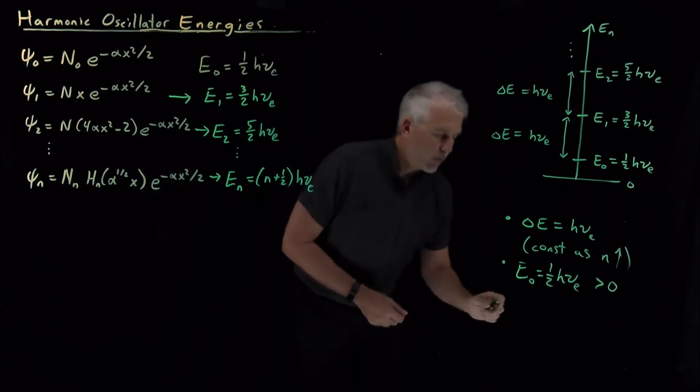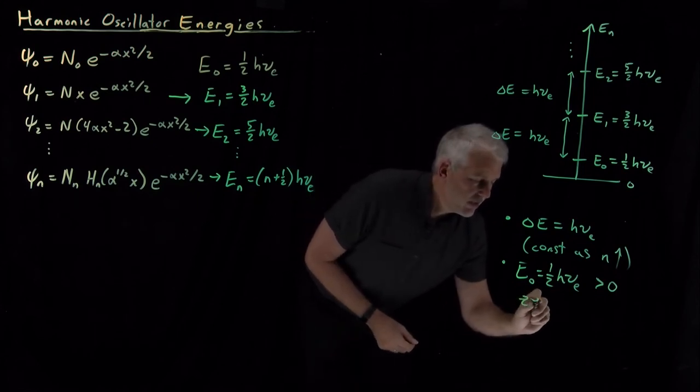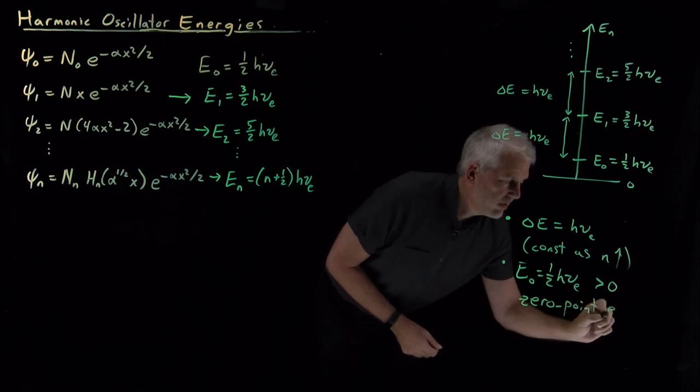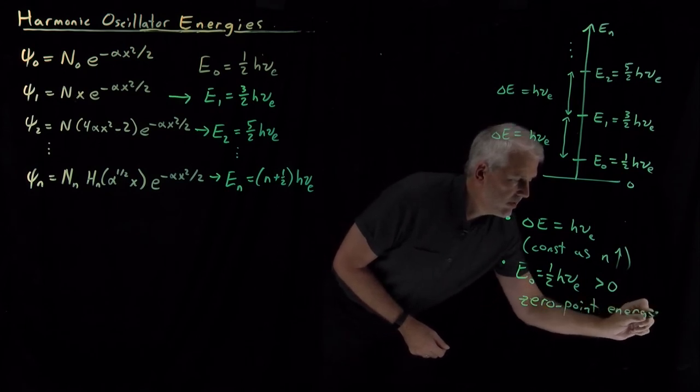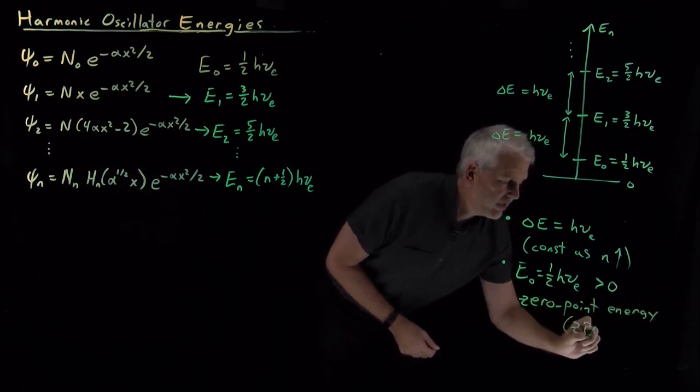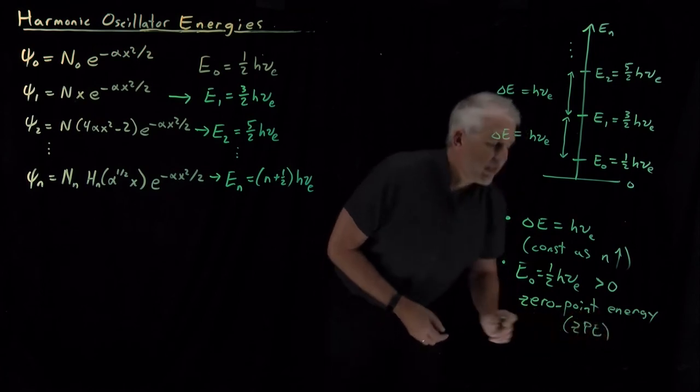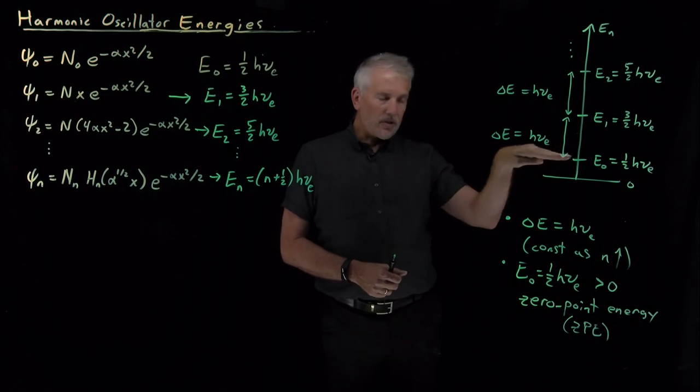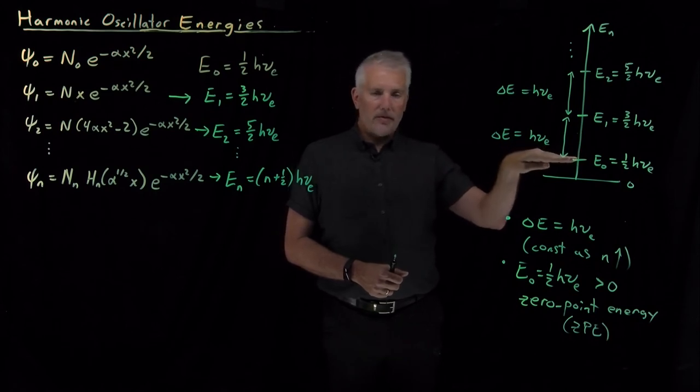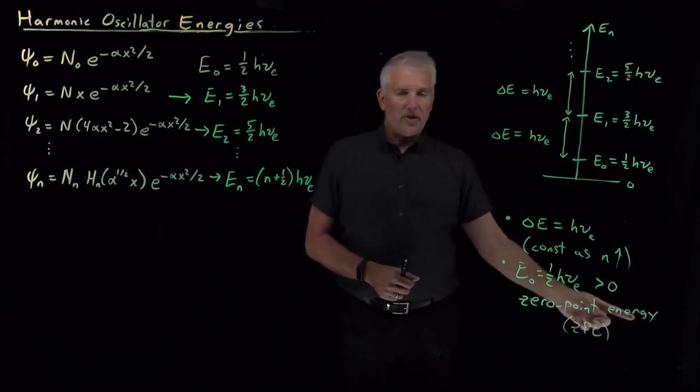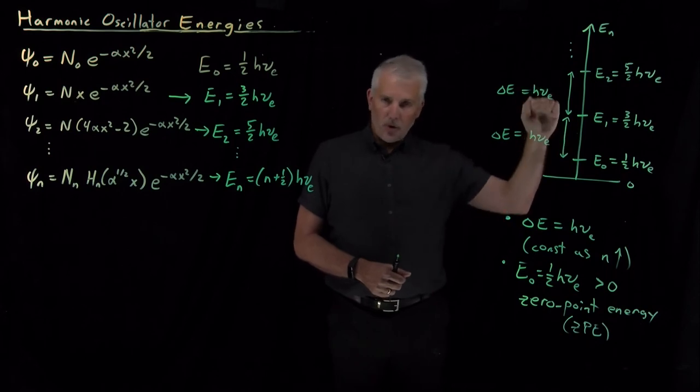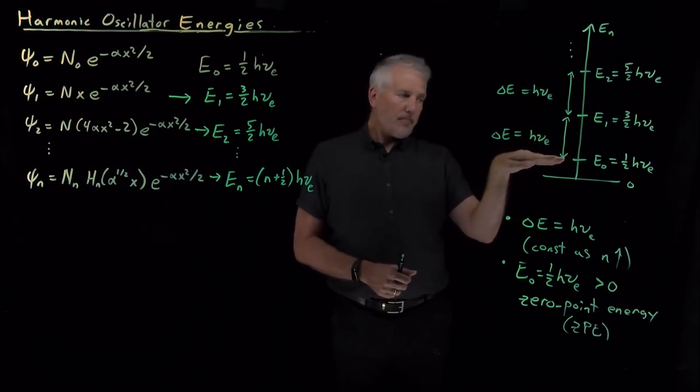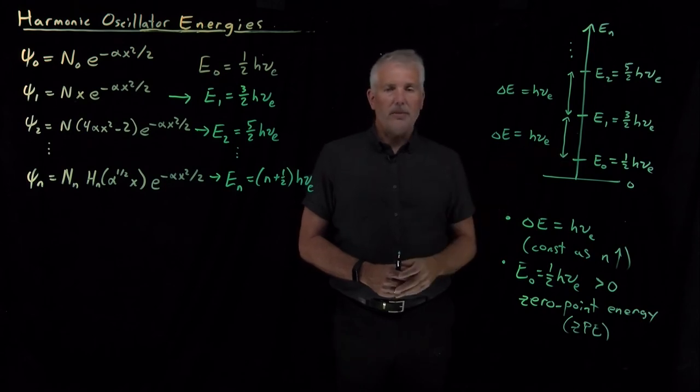It must at least have one-half h nu worth of energy and often more than that. So we say that the system has a zero-point energy, often abbreviated ZPE. Saying the system has a zero-point energy essentially just means that if we bring it down to its lowest, its zeroth energy level, it has some non-zero amount of energy when it's at that zero point. No matter how cold we make the system, how low the state it's occupying, it always has some non-zero energy.